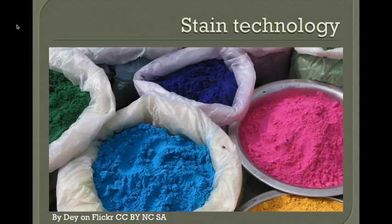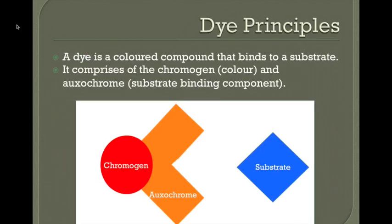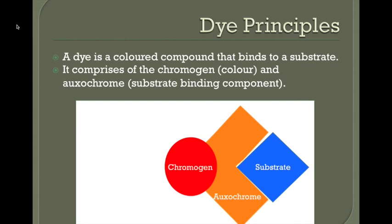Stain technology is quite lovely, and a lot of it is exactly the same as what happens in the textile industry — many dyes used to colour our clothes are exactly what we use in the laboratory. A dye is a coloured compound that binds to a substrate. It mostly has two parts: a chromogen, which is the coloured component we see, and an auxochrome, which is the component that binds to the substrate.